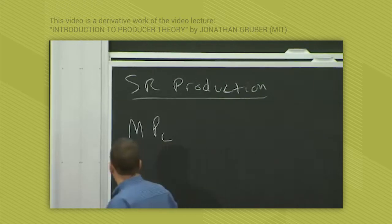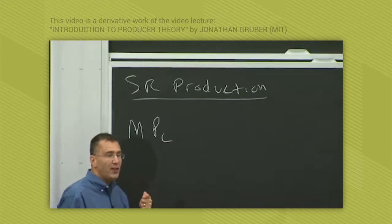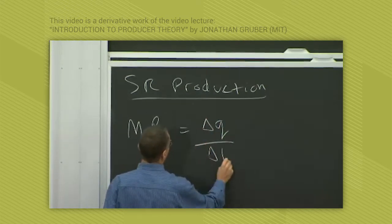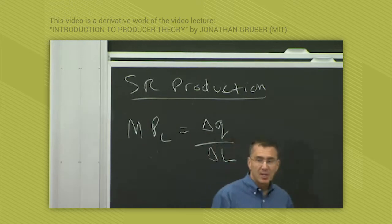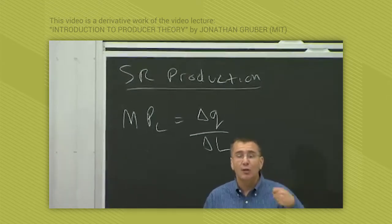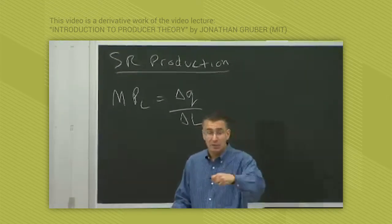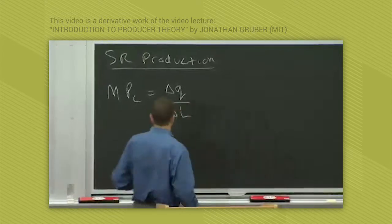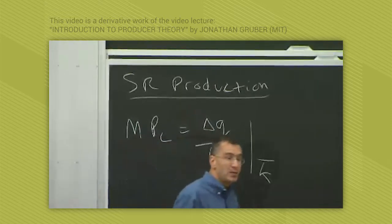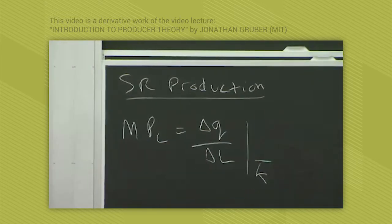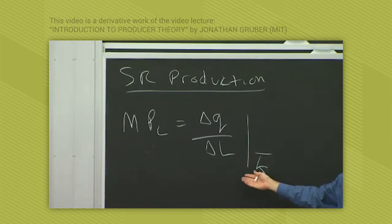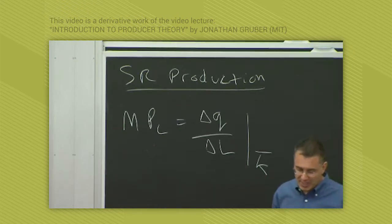The marginal product of labor is the change in total output resulting from the next unit of labor used. That is, delta Q over delta L is the marginal product of labor. It's the change in total output from another unit of labor, holding capital constant because that's fixed. In the short-run, this is implicit at a given K bar. At a given level of capital, what is the change in output for another unit of labor?